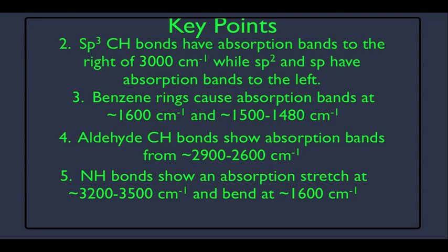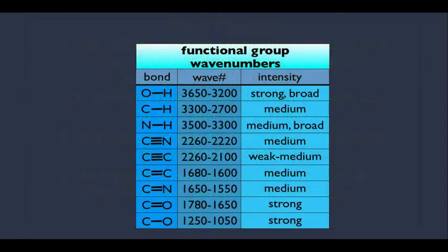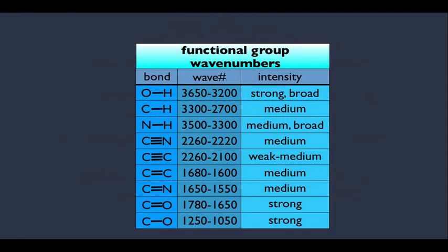Let's begin by going back to our chart. On this generalized chart, CH stretches or bendings are in the range of about 2700 to 3300 with medium intensity. But that's a very broad range, and what we want to do is get a more detailed look at the different types of CH bonds.